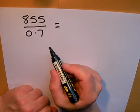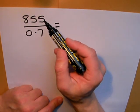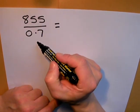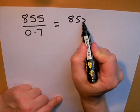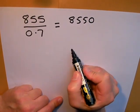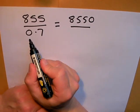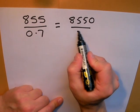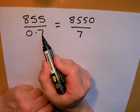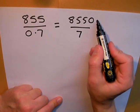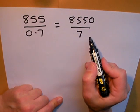The way I can do this is by multiplying the top number and the bottom number by 10. If I multiply the top number by 10, I get 8550. If I multiply the bottom number by 10, I get 7. So the answer to 855 divided by 0.7 is exactly the same answer as 8550 divided by 7.